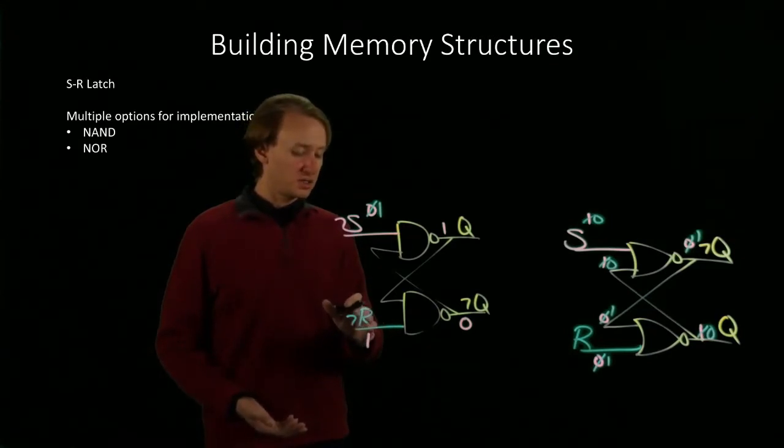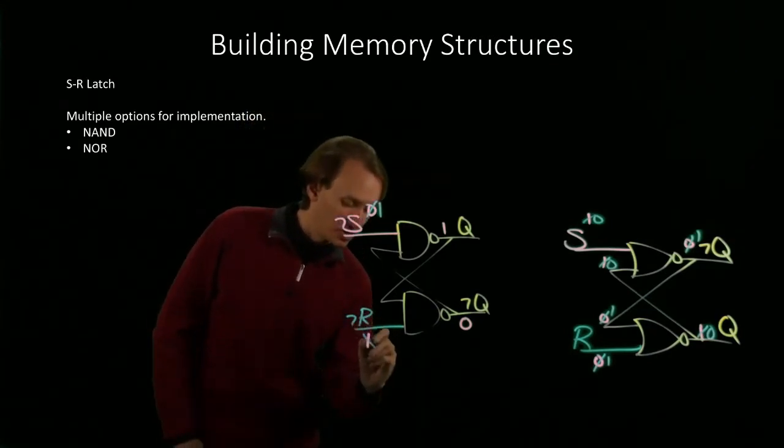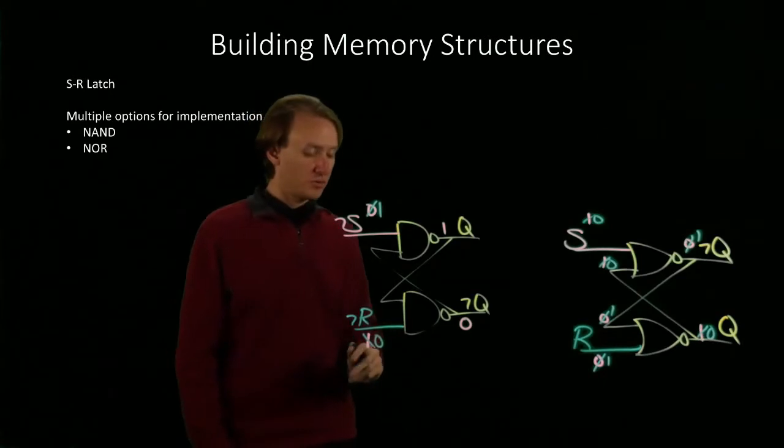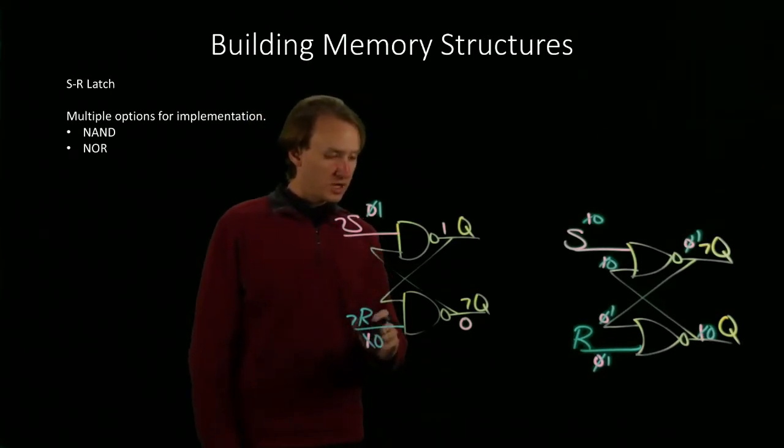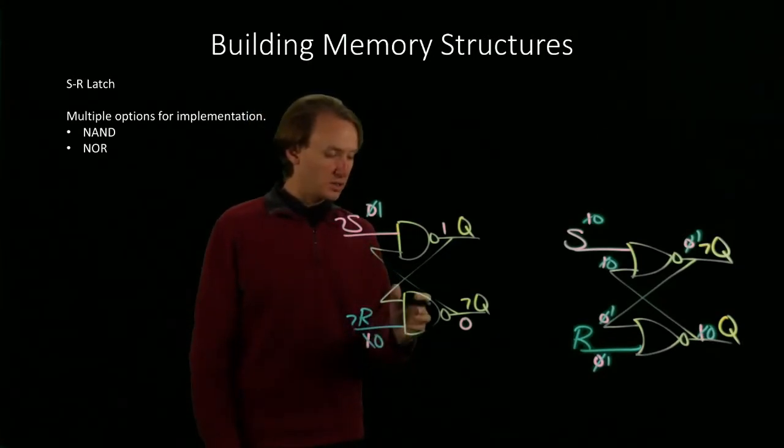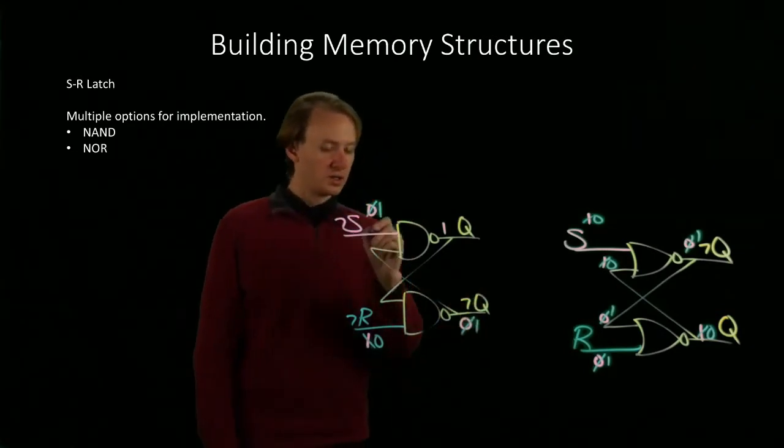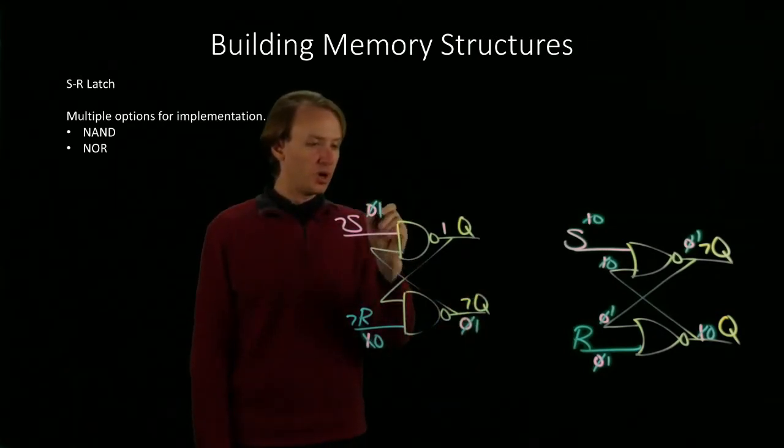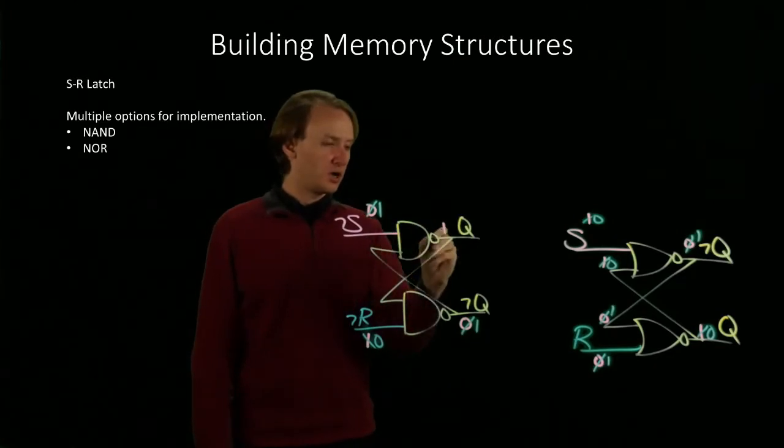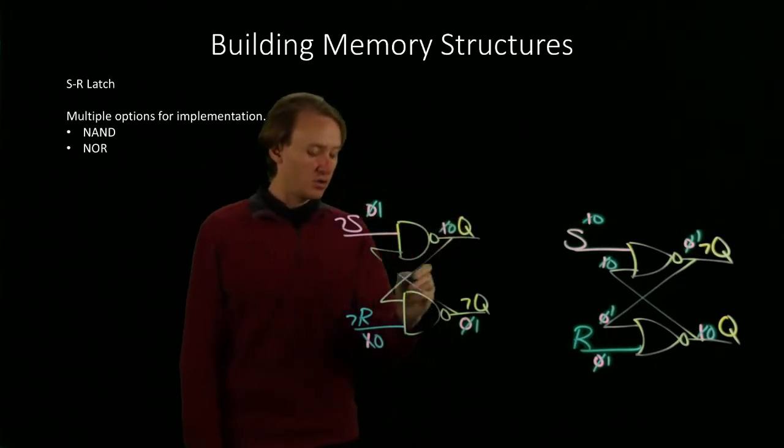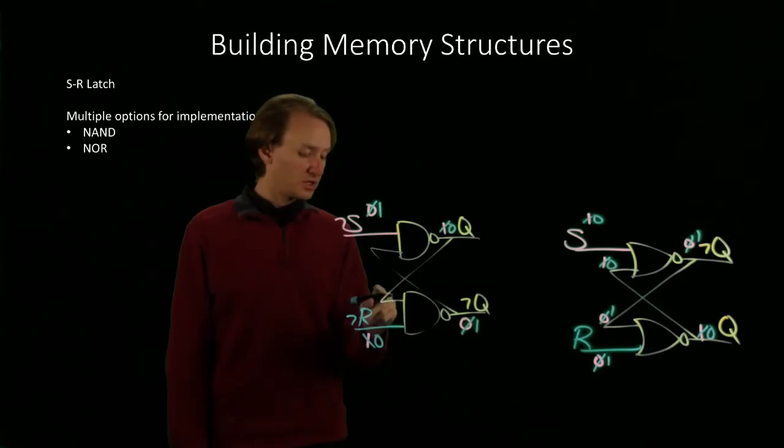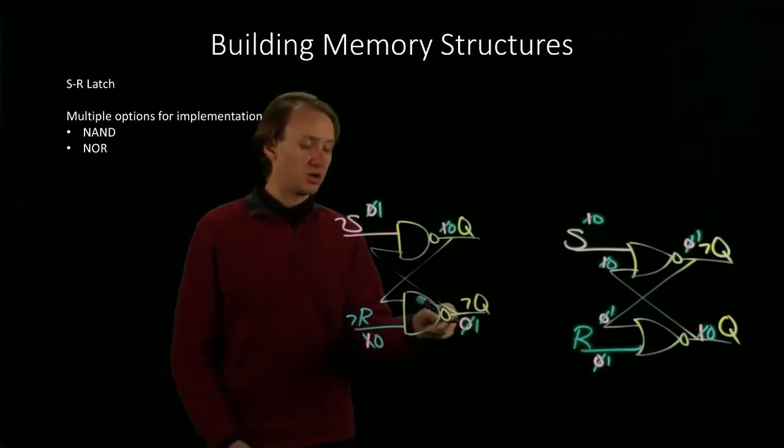Now if I assert the reset, then the negation of reset becomes 0. So I've got 0 and 1 gives me 0, not 0 is 1. Now I've got 1 and 1 gives me 1, so not 1 is 0. Then I'd again have 0 and 0 is 0 and not 0 is 1.